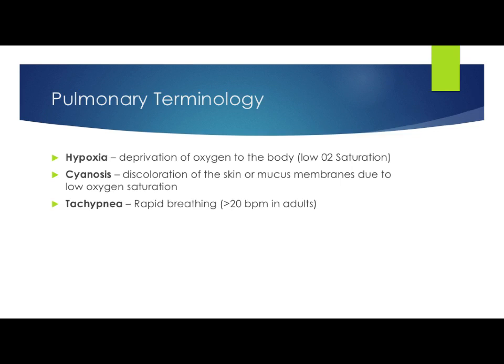Tachypnea is a relative word — tachypnea for a one-year-old is not the same as tachypnea for an adult. It basically means rapid breathing. In an adult, 20 breaths per minute or greater is considered tachypnea. A respiratory rate in babies can be anywhere up to 44 breaths per minute. You'll get classifications by age, and there are charts that lay out the normal breaths per minute for each age group.